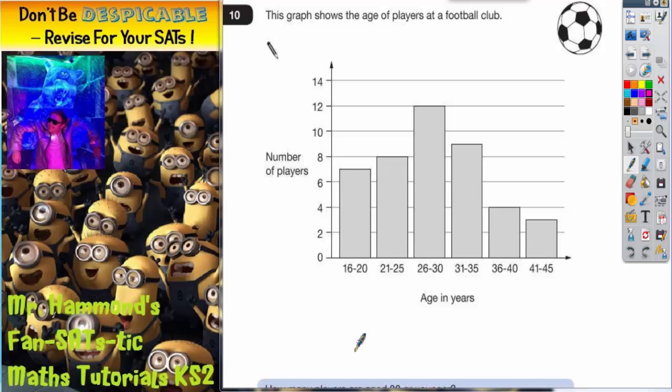Now the first thing to notice is that the most popular group is 26 to 30 years old, because that's got the biggest bar. And the least popular group is 41 to 45 years old, because that's got the smallest bar.